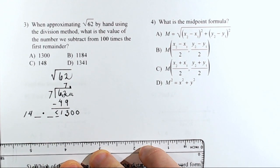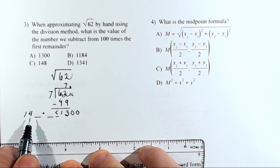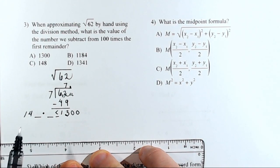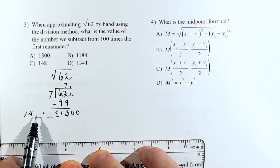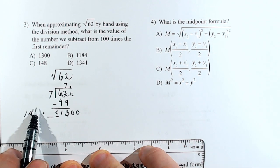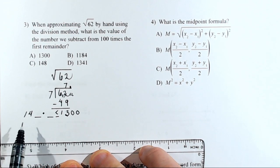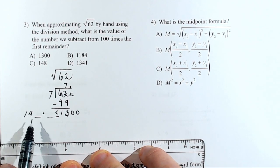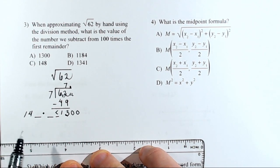I'll put a decimal place right here and then bring down two zeros to make 1,300. Remember, we then use the division method structure: double 7 to get 140-something. The number that goes in that position has to be the same number that goes here — we have to test values. It can't be 10, because 140 times 10 is 1,400, so it's got to be less than that.